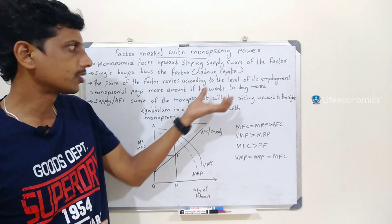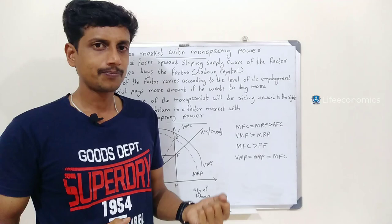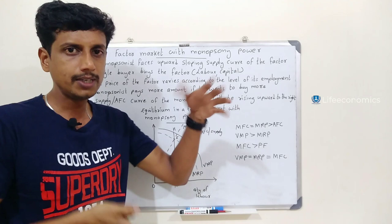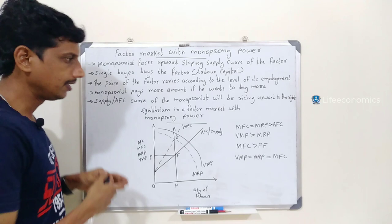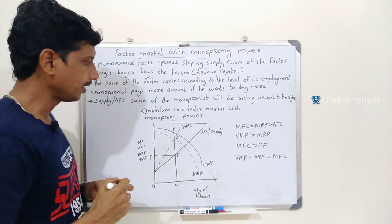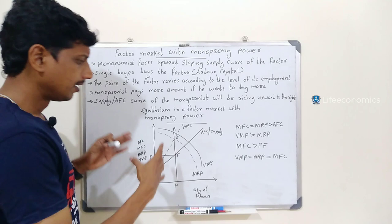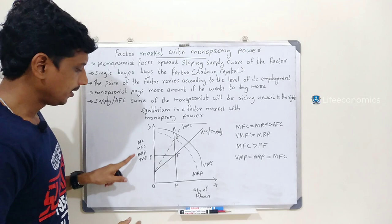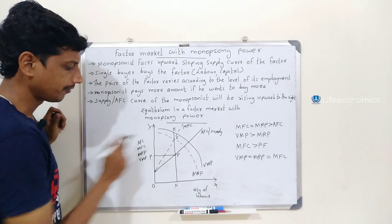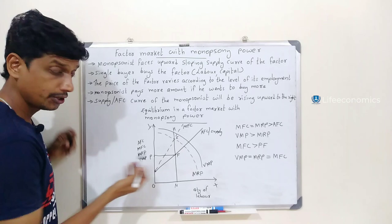Looking at the average factor cost and equilibrium: the equilibrium is found in a factor market with monopsonist power. On the Y axis we have AFC, MFC, MRP, and VMP. AFC is Average Factor Cost, MFC is Marginal Factor Cost, MRP is Marginal Revenue Product, and VMP is Value of Marginal Product.